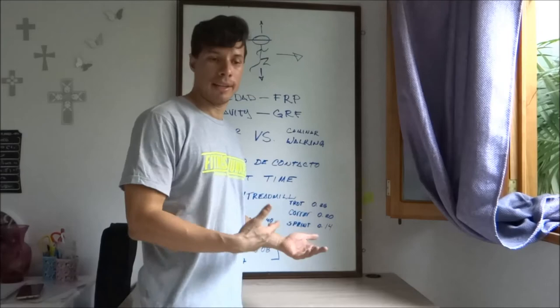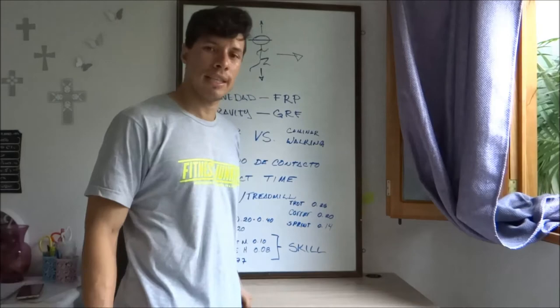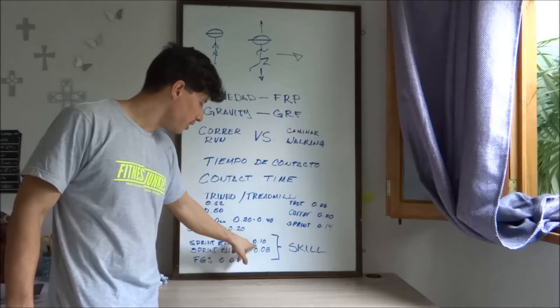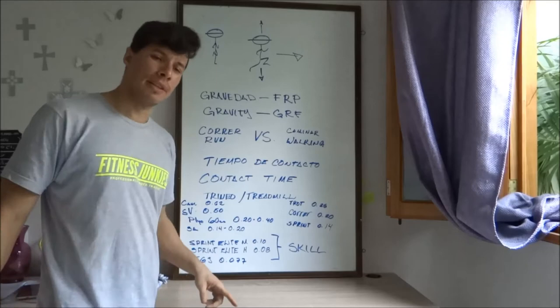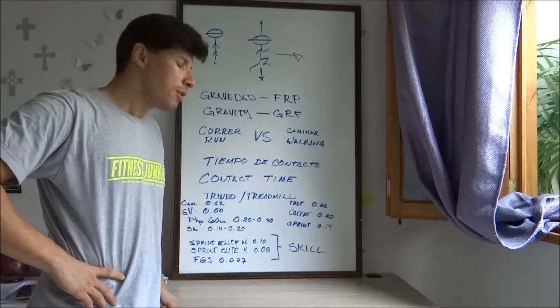That's why I put this example: the contact time on the ground for several activities. As you see, walking on average takes 0.62 of a second. A vertical jump will take 0.50. A plyo falling from roughly 24 inches, because it's 60 centimeters, more or less—20 inches, something like that—it takes 0.20 to 0.40. A high jump takeoff, if you're a speed high jumper, it will be actually quicker. It'll be 0.14 to 0.20 of a second. But just jogging takes 0.26. It's almost half the time of a vertical jump.